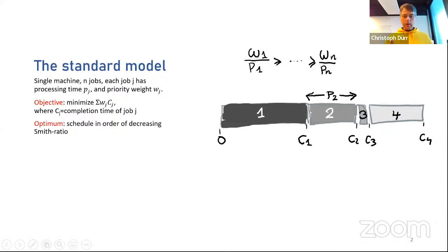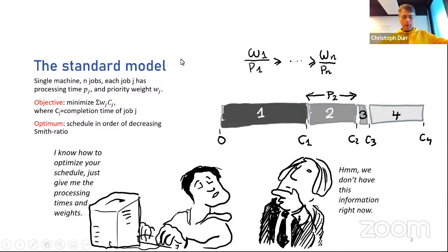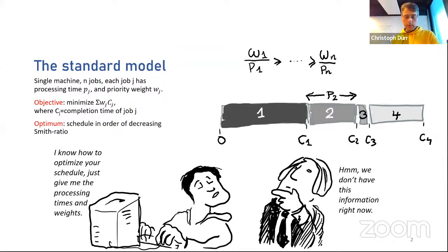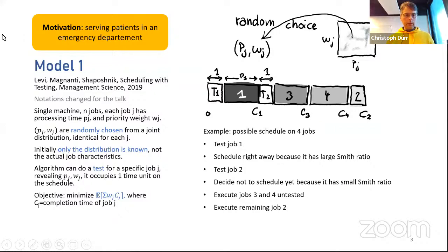So if a client comes to you and says 'I want to solve this problem,' you can tell them: 'Just give me the processing times and the weights.' But the client says, 'We don't have this information right now.' In practice, it's actually very hard to get the data — this is a big part of any industrial project. This creates the need to study a model where you ask for the data. The more data you ask for, or the more precise your data, the better quality you can produce. So this whole area is about finding a balance between those two things.